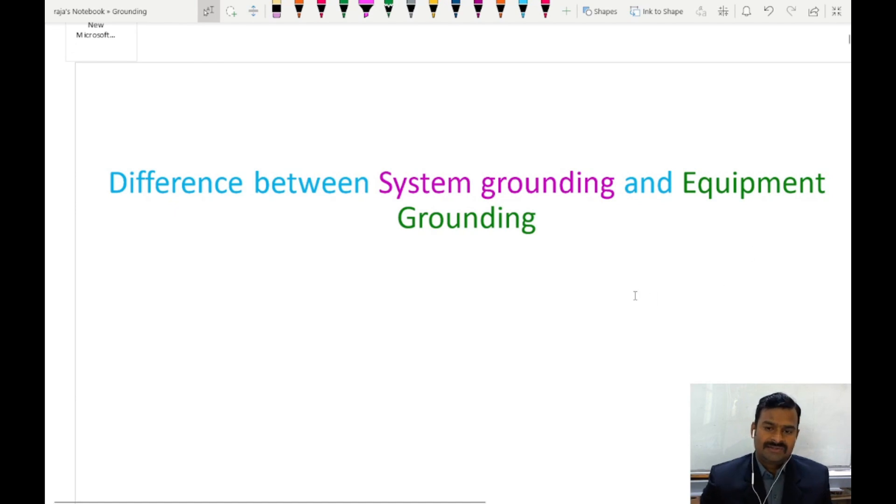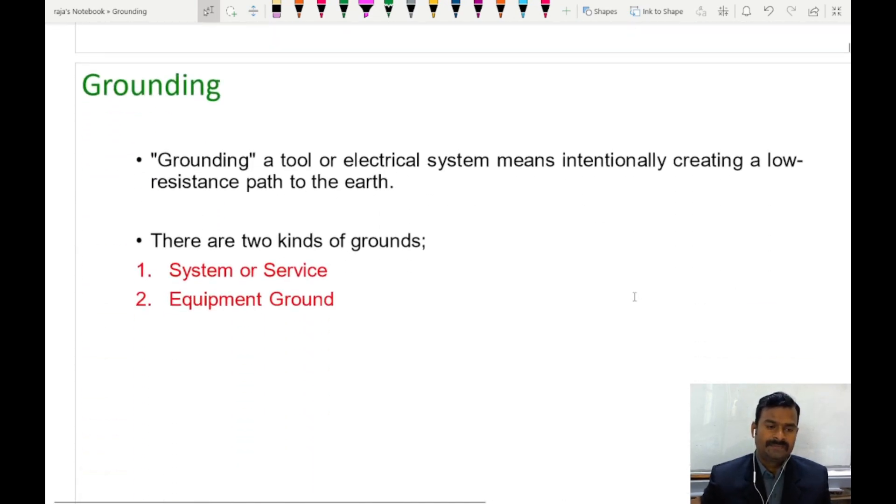So first let us understand what is grounding. Grounding a tool or electrical system means intentionally creating a low resistance path to the earth. Now you may have a question, why we need to create a low resistance path to the earth? What is the need?